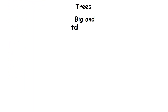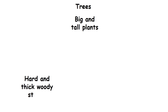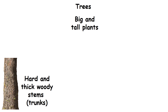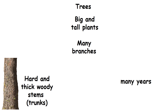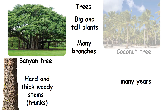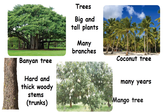Trees. Big and tall plants are called trees. They have hard and thick woody stems called trunks. Trees have many branches and they live for many years. Examples: banyan tree, coconut tree and mango tree.